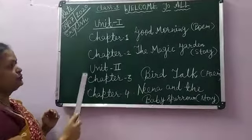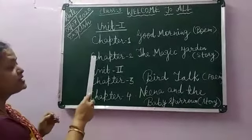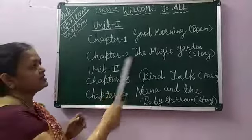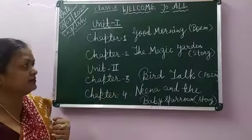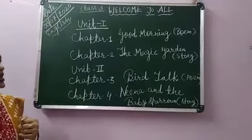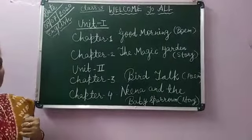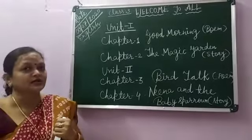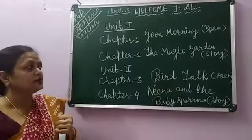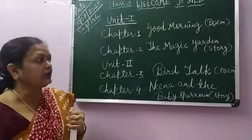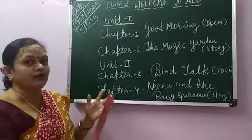Next, chapter 2. The chapter's name is The Magic Garden. It was a story about flowers and how we should take care of flowers.